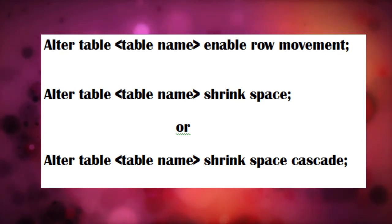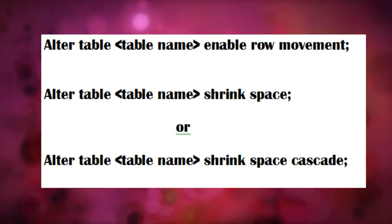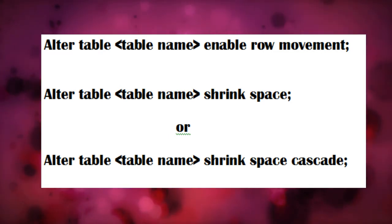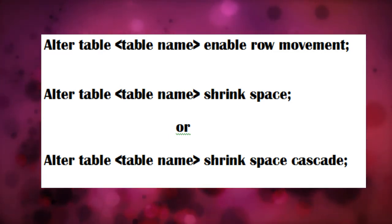Once that's done, you can either use alter table table name shrink space command, or you can use the alter table table name shrink space cascade command. This cascade option basically will recover space for the objects and all dependent objects, and it does not alter the indexes.